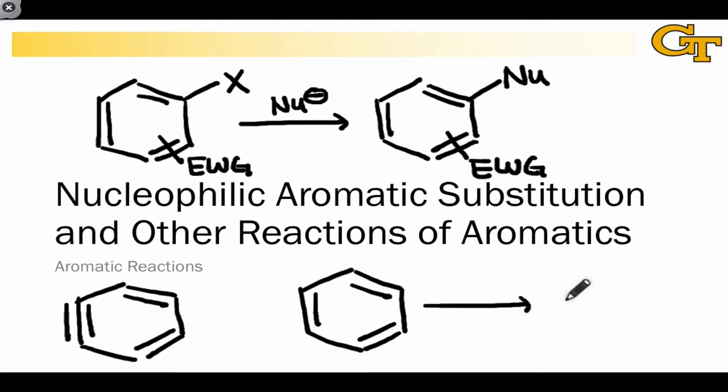This is called the Birch reduction, and the interesting thing about this reaction is that it uses the same conditions as dissolving metal reduction of alkynes, which we've seen before. And like that reaction, it leads to partial reduction from a compound with three double bonds, in a sense, to a compound with only two.